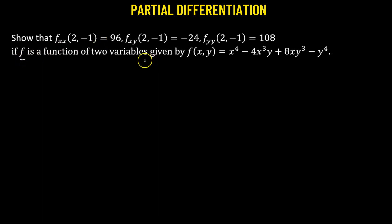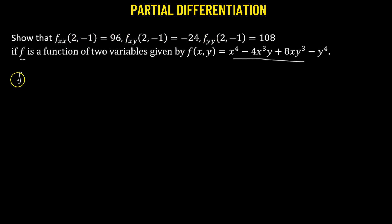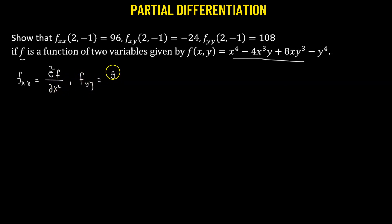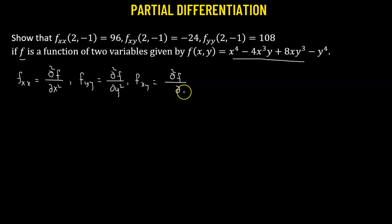We have a function f of two variables x and y, which is given by this particular expression. We have to show that fxx calculated at the point (2, -1) is 96 and the rest of the values. fxx simply means the second partial derivative of f with respect to x. fyy means the second partial derivative of f with respect to y, and fxy means the second partial derivative of f with respect to y followed by x.